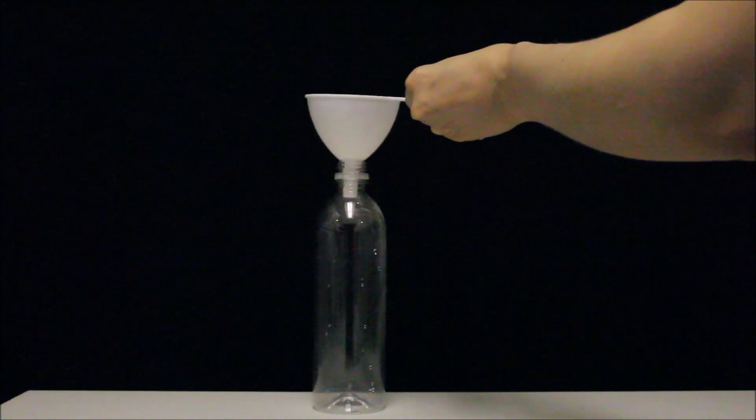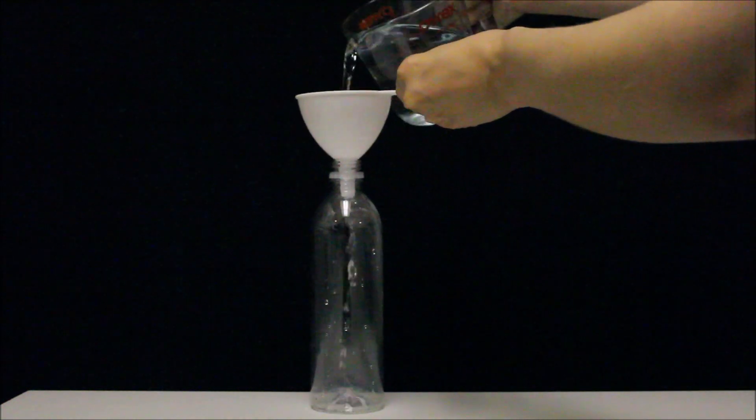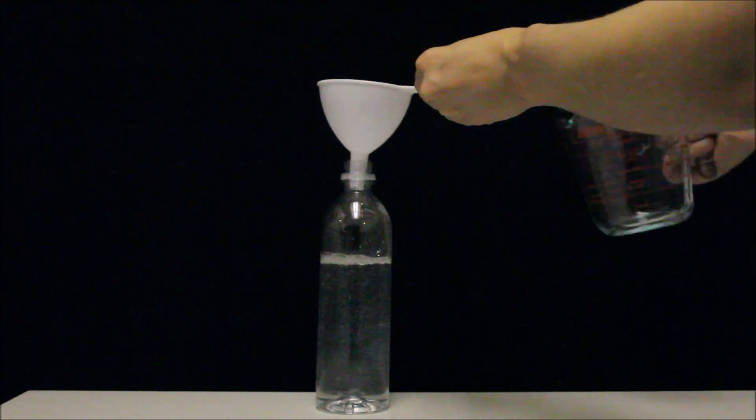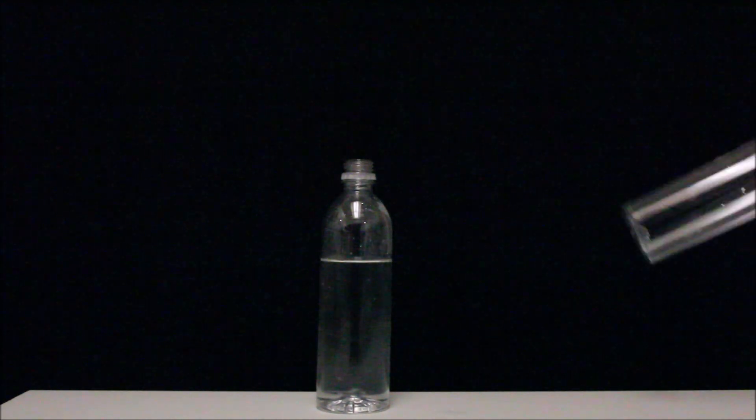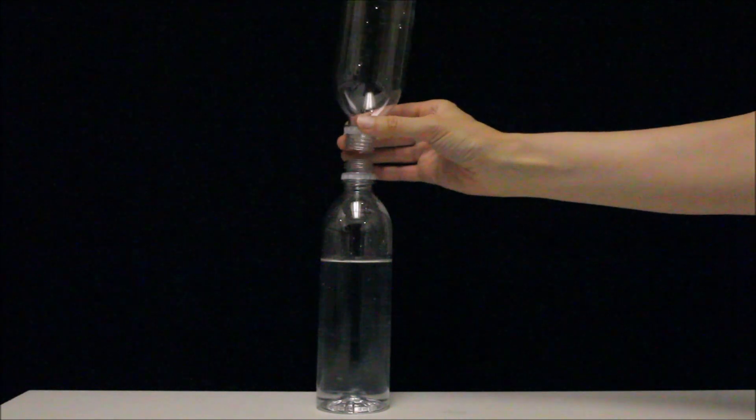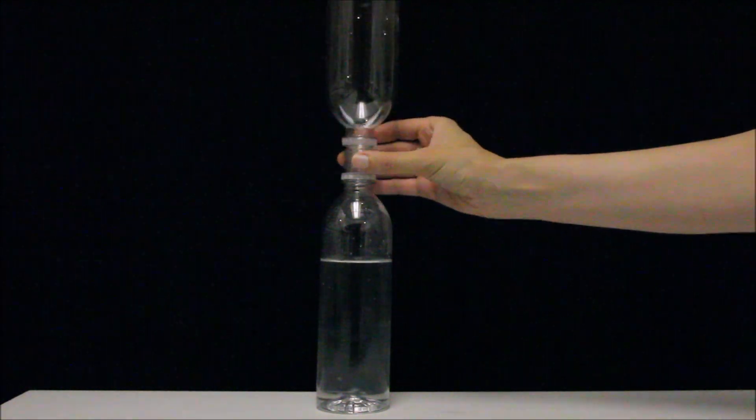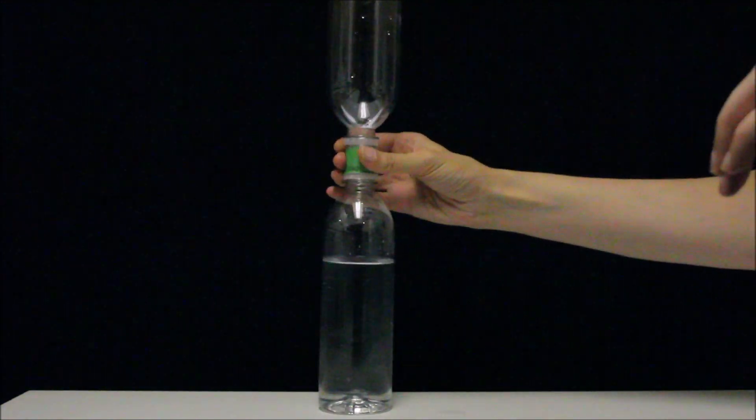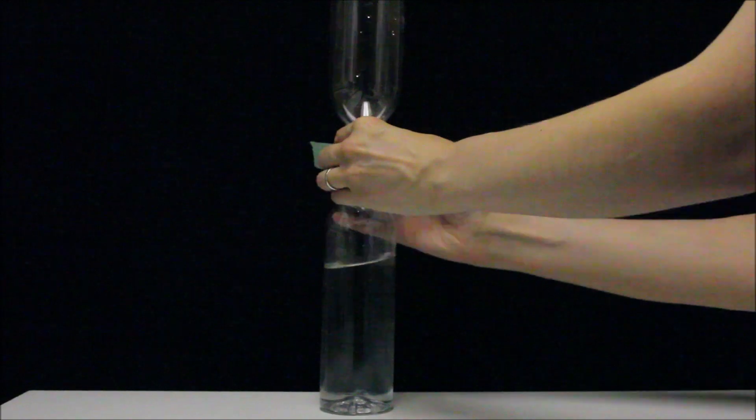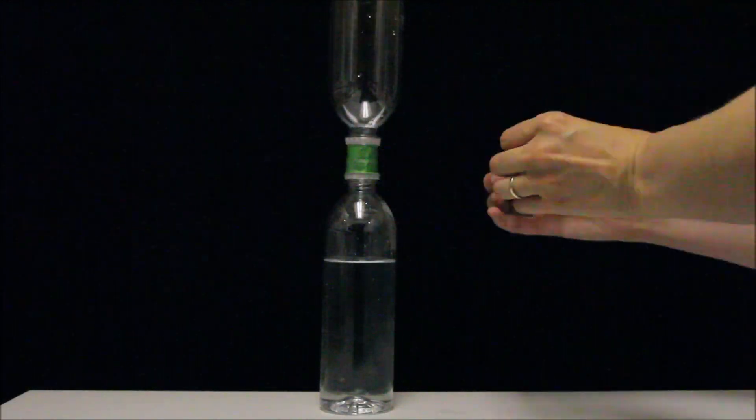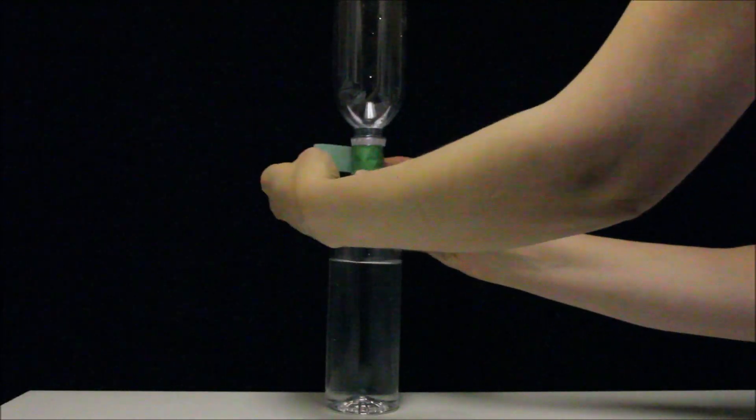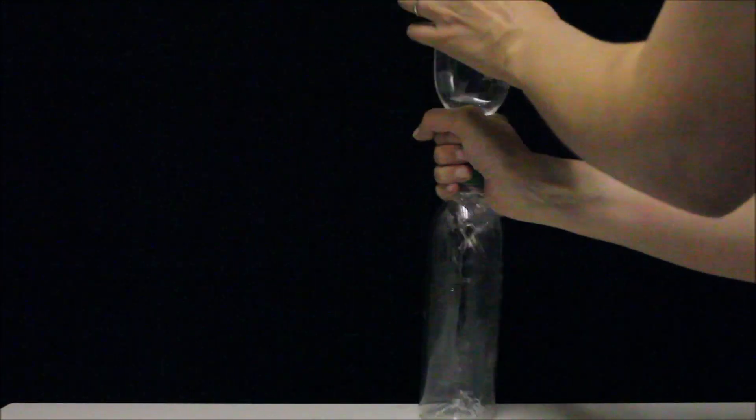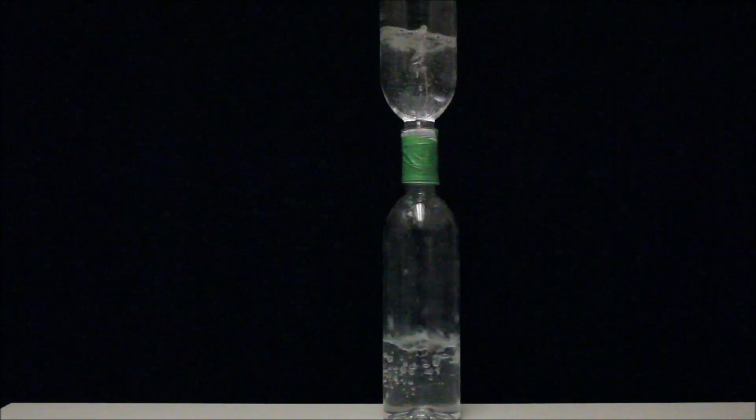Let's start by pouring the water in one of the bottles. Place the other bottle on top and tape the two bottles together. Flip the bottles, spin them, and watch a whirlpool form.